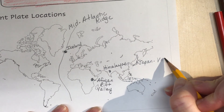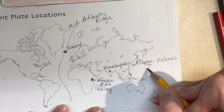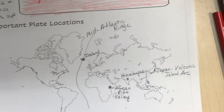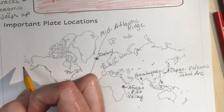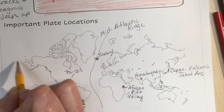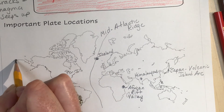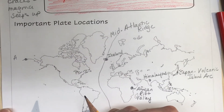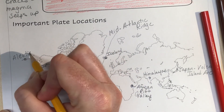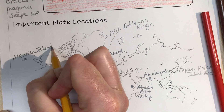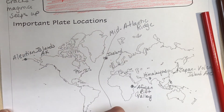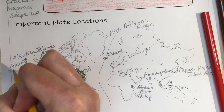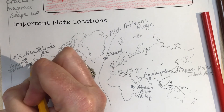The other oceanic-oceanic convergent boundary to know is up in Alaska — it's a chain of islands that goes this way: the Aleutian Islands in Alaska. That is also a volcanic island arc.